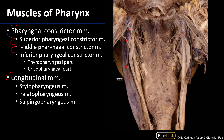Coming down laterally here we can see one of the three sets of longitudinal muscles. This particular set are the stylopharyngeus muscles. The stylopharyngeus muscles take their origin from the styloid processes of the temporal bone and have their distal attachment to the thyroid cartilage of the larynx. An important relationship to note is that of the glossopharyngeal nerve, which rides down along the posterior aspect of the stylopharyngeus muscle.